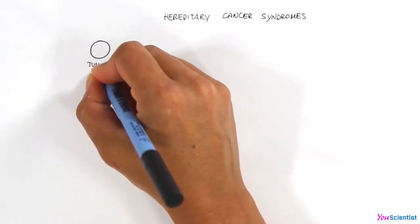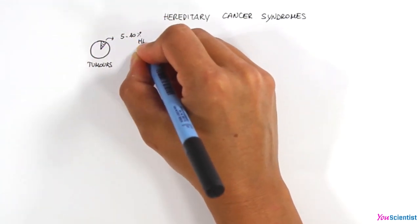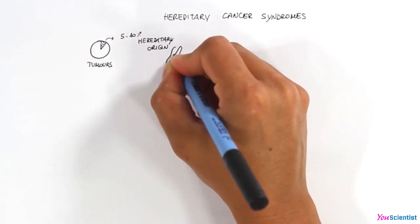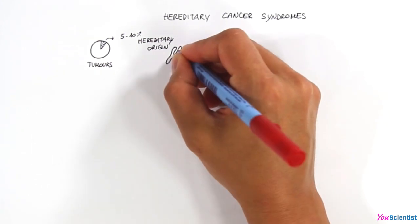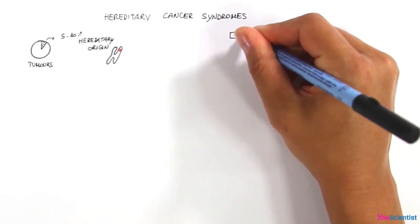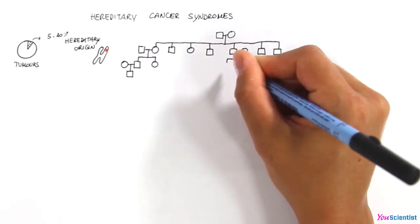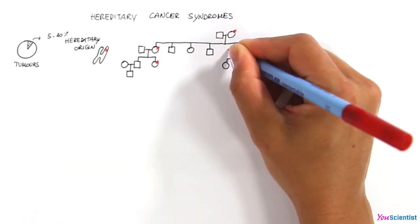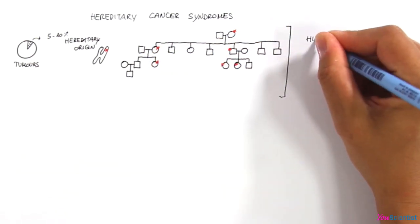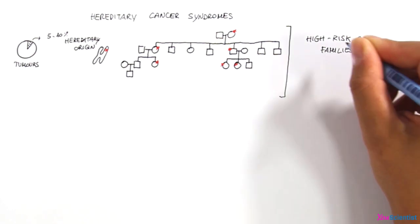Hereditary tumors represent between 5 and 10% of all cancers diagnosed in populations. They are caused by mutations in genes that are crucial for cell viability. These mutations can be transmitted to the progeny and passed from generation to generation. The existence of families with a strong history of cancer